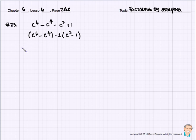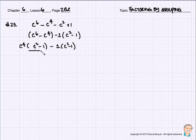If we look at this first grouping here, we can factor out a c to the 4th, which leaves me with a c squared minus 1. Then we have minus 1 times c squared minus 1. How convenient — we can take out the c squared minus 1 and stick it on the outside as a factor, which leaves me with a c to the 4th minus 1.